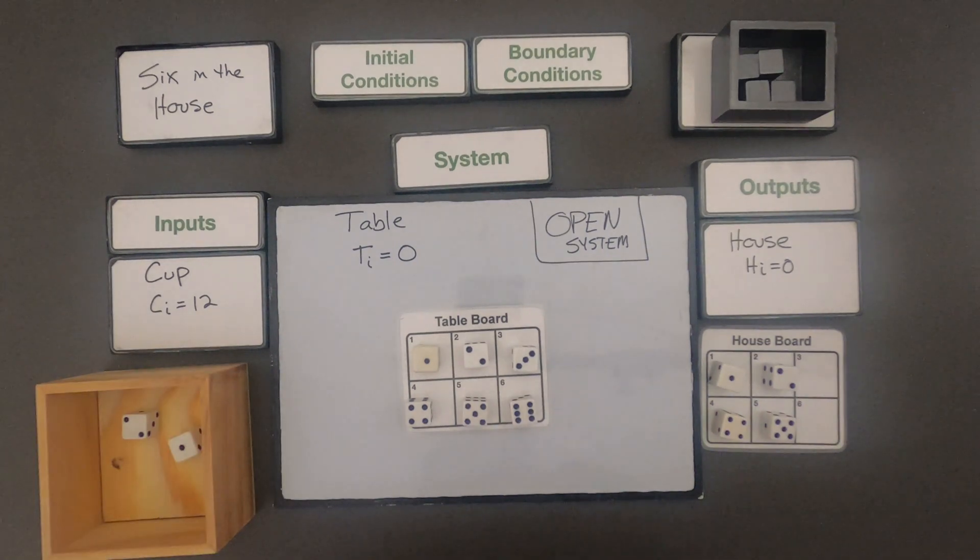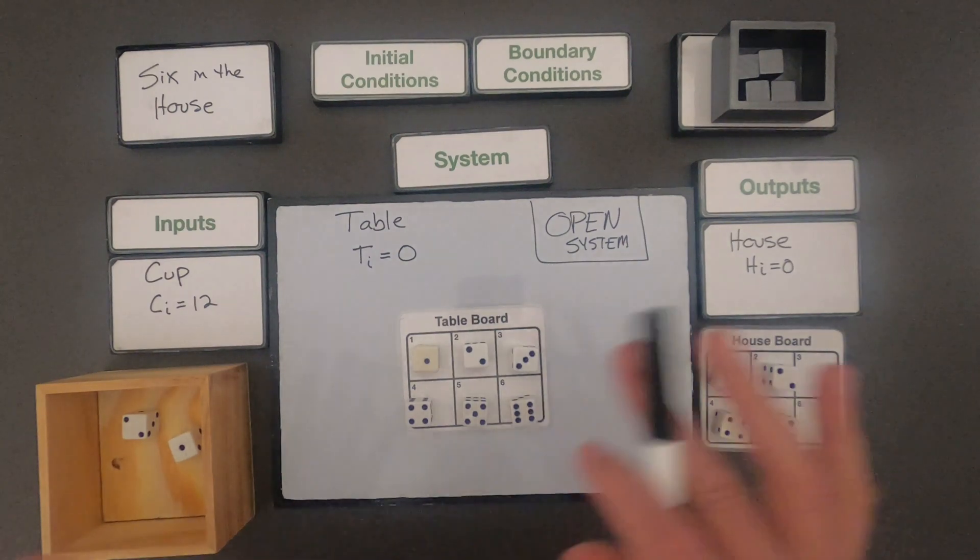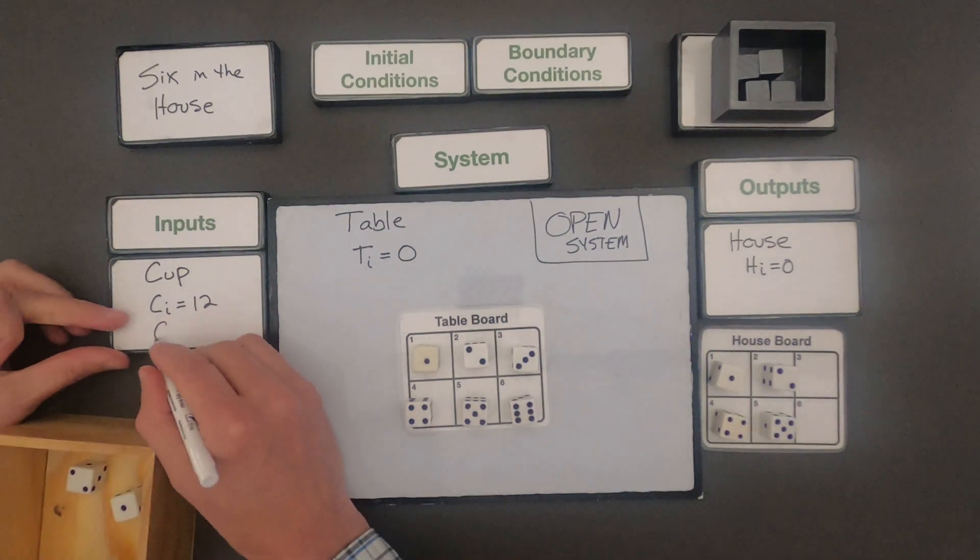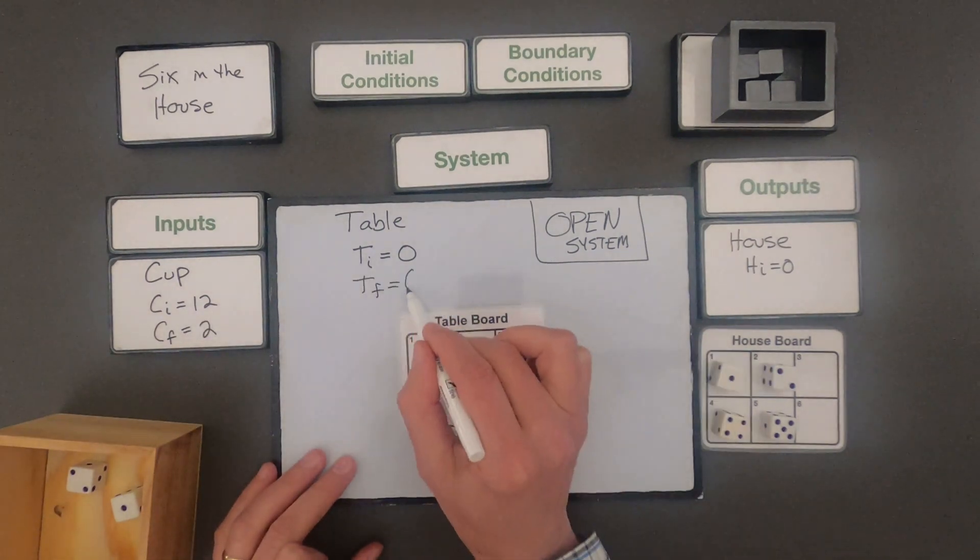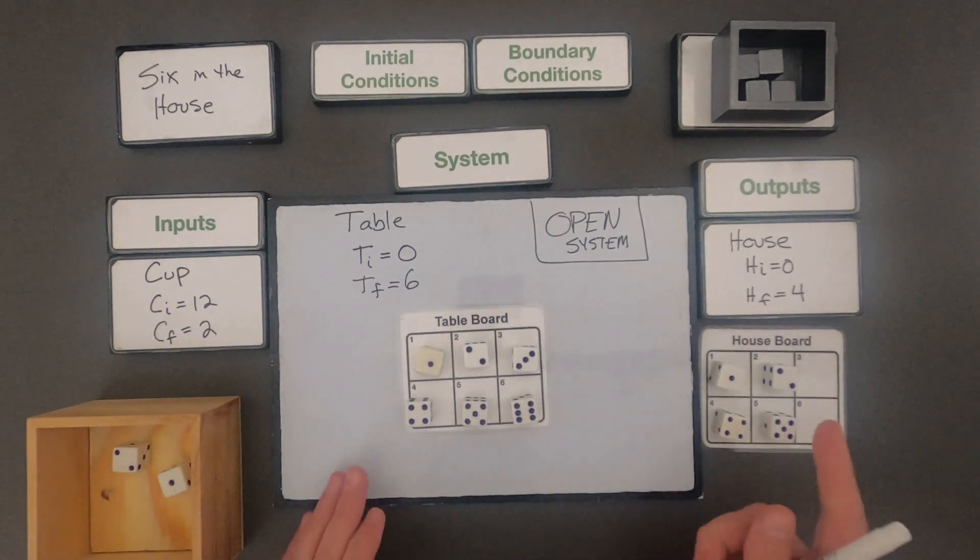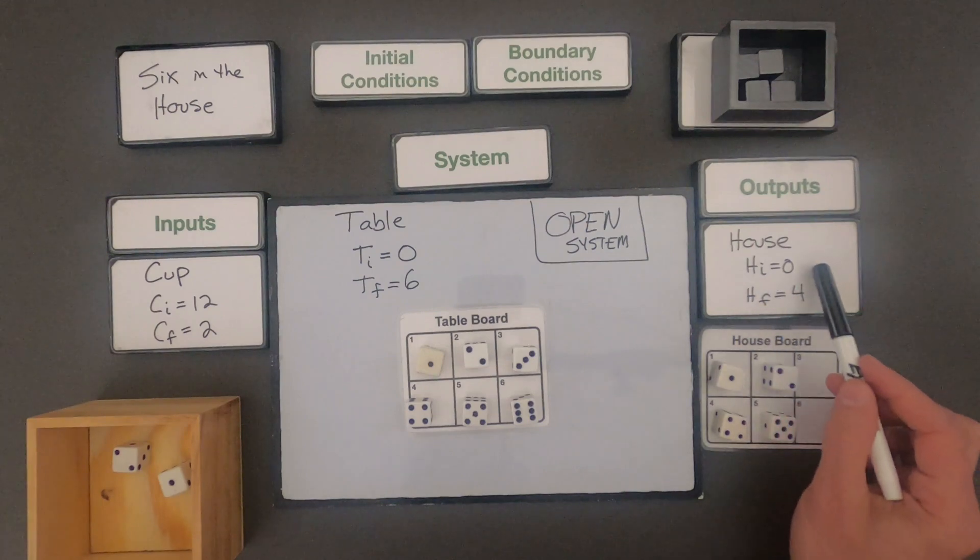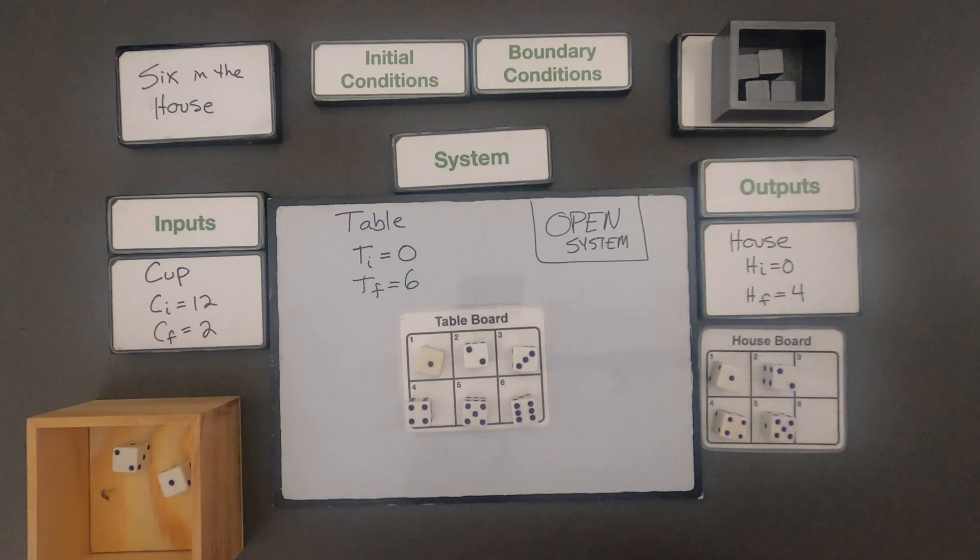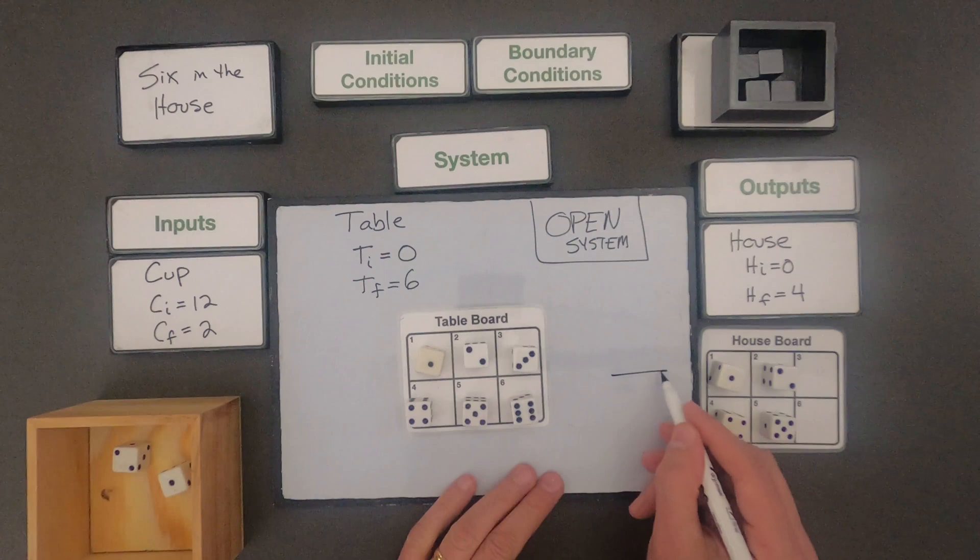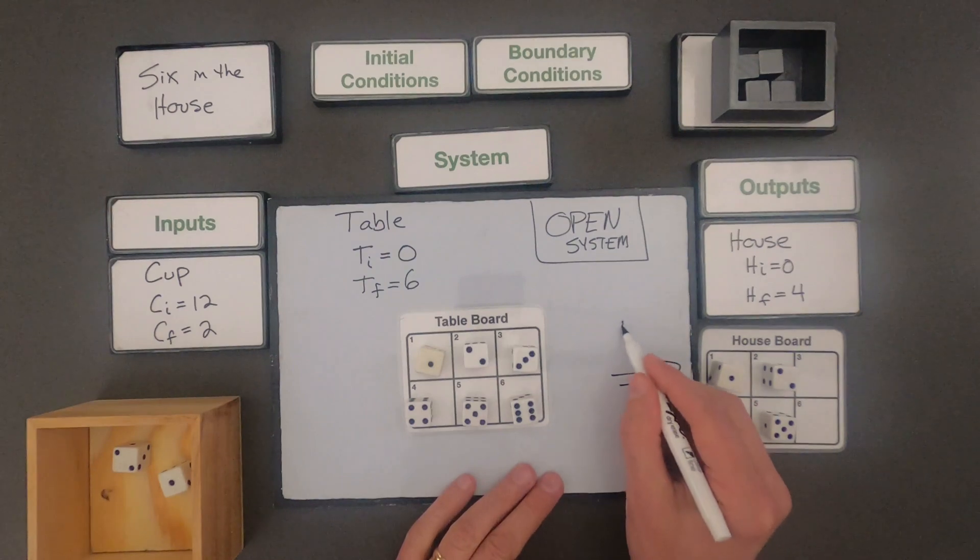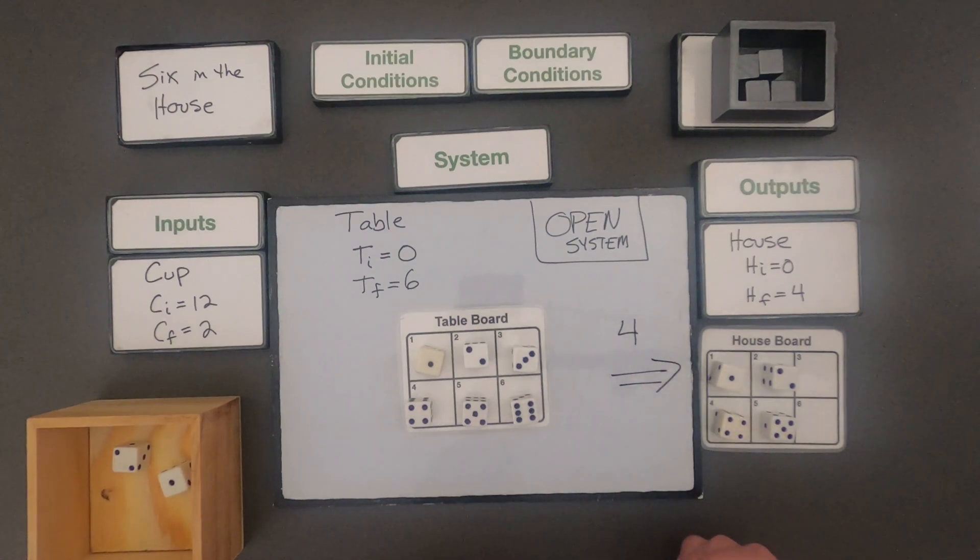Okay now we need to keep track. You can see that I didn't win. I got 4 in the house but I didn't get 6 in the house. So let me talk about the final conditions. So we can kind of work backwards. So since my initial was 0 and my final is 4, that means the outputs, in other words what has left the system is 4 dice have left the system.